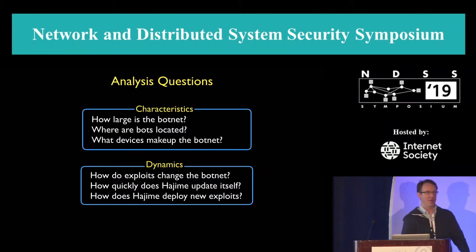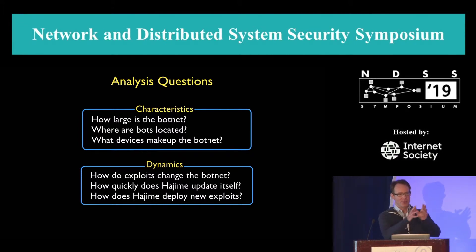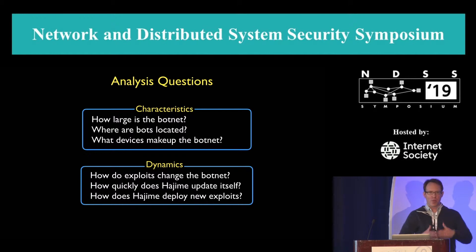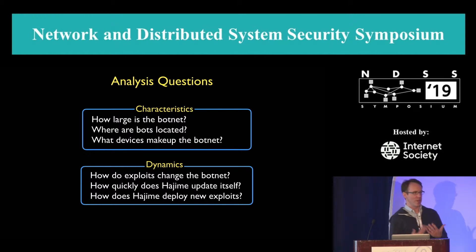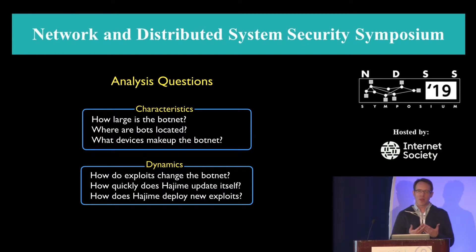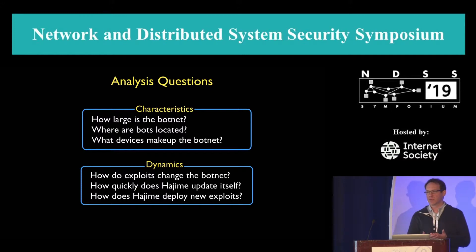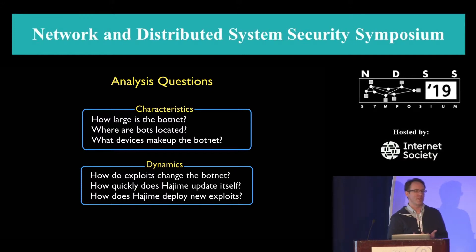With the data in hand, we turn to analysis. We seek to understand two things: first, at any snapshot in time, what are the characteristics of the botnet — its size, location, and device composition? And then, dynamically over time, how do those features change? In particular, we'll look at specific events — namely the deployment of exploits — and how those change the composition.